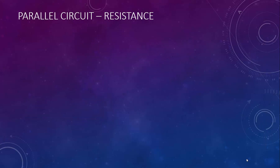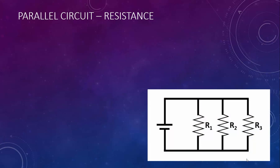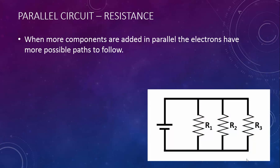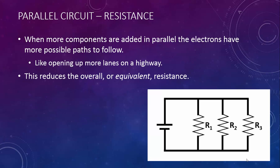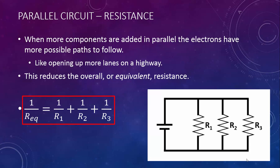Finally, let's talk about resistance in a parallel circuit. When more components are added in parallel, the electrons have more possible paths to follow — this is like opening up more lanes on a highway — which reduces the overall, or equivalent, resistance. It's not easy to write an equation that shows the sum getting smaller as you add more numbers, so the equation for equivalent resistance in a parallel circuit is a little complicated. The reciprocal of the equivalent resistance equals the sum of the reciprocals of the individual resistances.